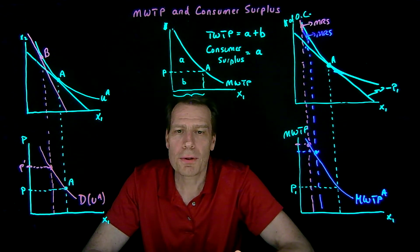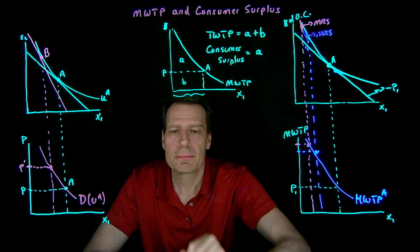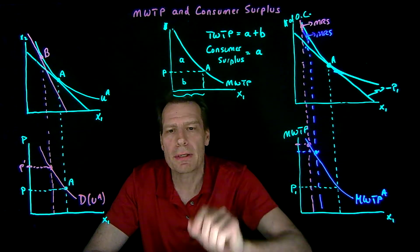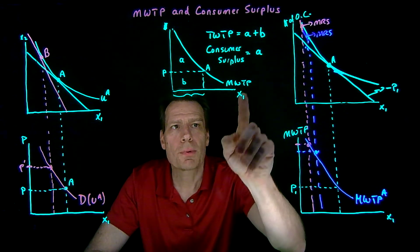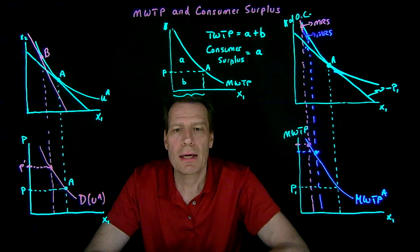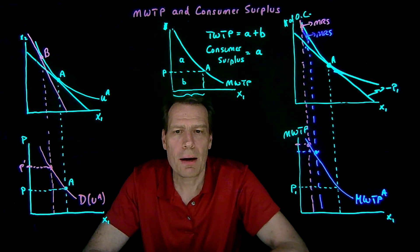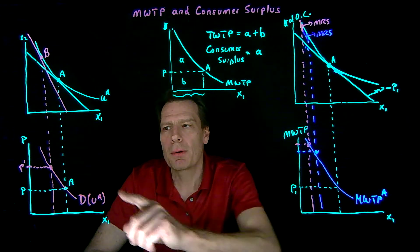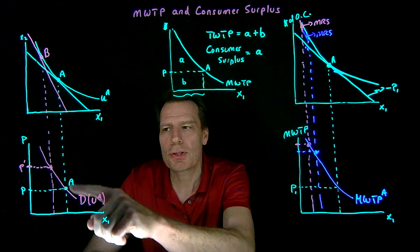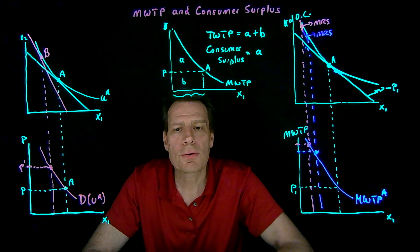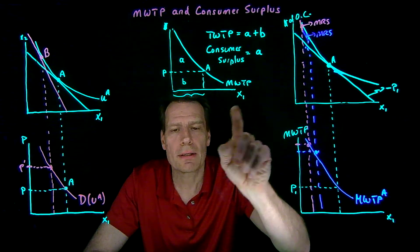In Econ 101 you might have learned that consumer surplus is the area above the price up to the demand curve. That's true when the demand curve equals the marginal willingness to pay curve, which we now know is true when good x1 is quasi-linear. But in all other cases, the marginal willingness to pay curve — the compensated demand curve — is a different curve than the uncompensated demand curve. So measuring consumer surplus on the uncompensated demand curve would over- or underestimate consumer surplus depending on whether the good is normal or inferior. There's an additional income effect that makes the demand curve either shallower or steeper, so measuring consumer surplus on regular demand curves gives an incorrect estimate unless x1 is quasi-linear.